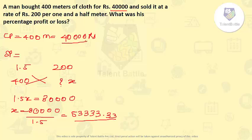Now cost price is Rs. 40,000 and selling price is Rs. 53,333. So the profit is going to be Rs. 53,333.33 minus Rs. 40,000. So that is going to be Rs. 13,333.33. This is profit.